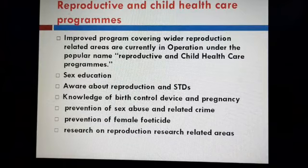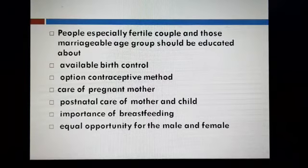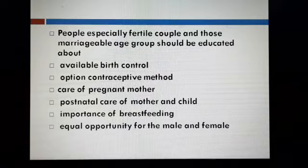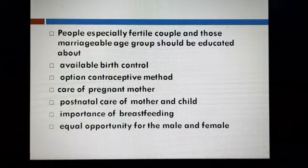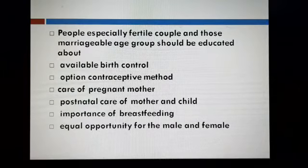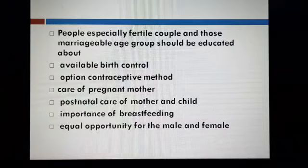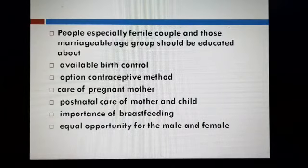Adults should be educated about reproductive organs. People, especially fertile couples and those in a marriageable age group, should be educated about available birth control options and contraceptive methods. They should know how to care for pregnant mothers and provide postnatal care of the mother and child after delivery, the importance of breastfeeding, and equal opportunity for male and female children. This will help them understand the importance of a socially conscientious healthy family of desired size.